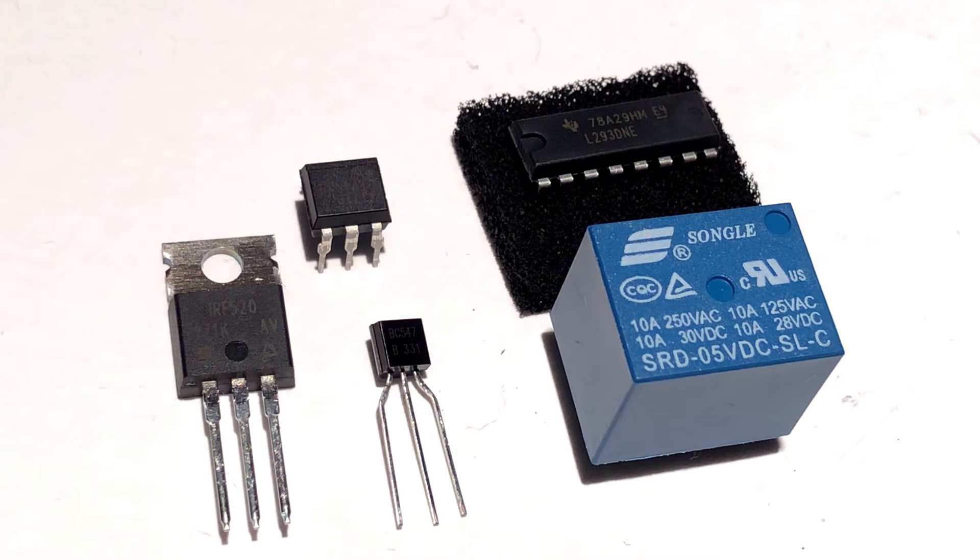With PWM we can actually control how much current is allowed to flow, which is why transistors and H-bridges are used for motor control. It allows us to control the speed of the motor using PWM.